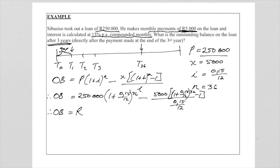And your final outstanding balance amount will be 165,408 rand and 43 cents. So this is the outstanding balance of the loan after three years of payments on a loan of 250,000 rand. I hope this is clear and that you will be able to do problems similar to this one. Thank you.